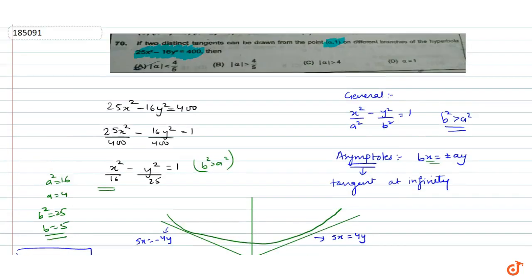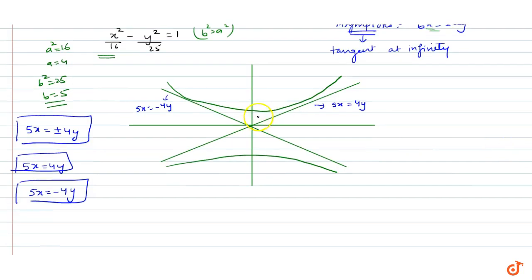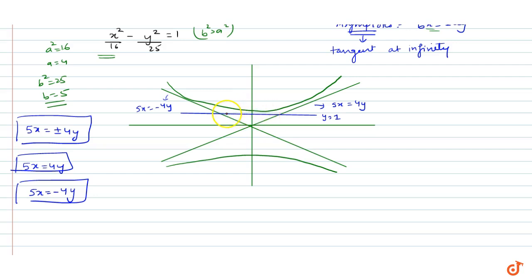Now we are asked: from the point (alpha, 1), two distinct tangents are drawn. Since y = 1 is a positive y-coordinate, the line y = 1 is somewhere here, and the point (alpha, 1) lies on this line, between the two asymptotes.